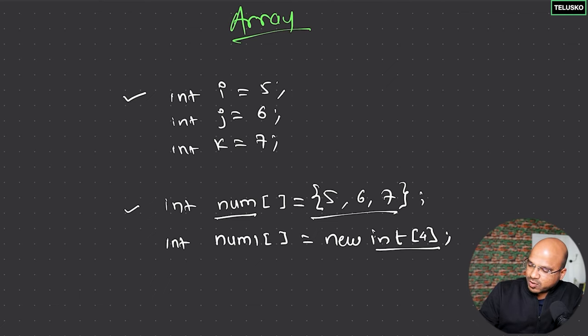So this particular num1 will have four values, not more than that. It's a size is fixed, you can't increase dynamically. Now once we know why do we need an array, let's continue with the example in the next video.